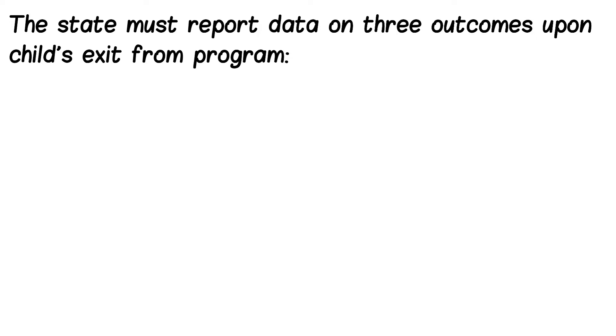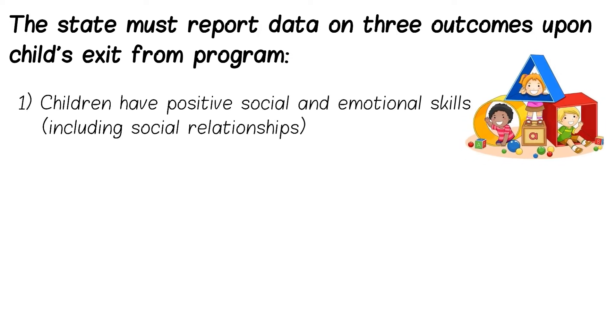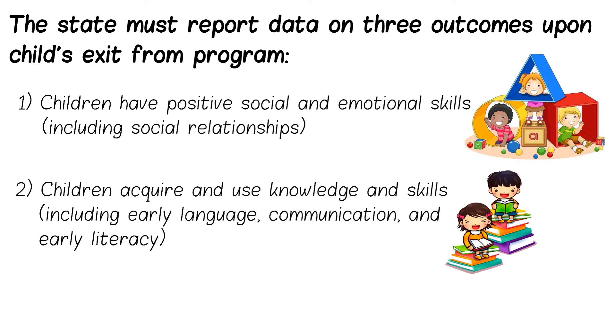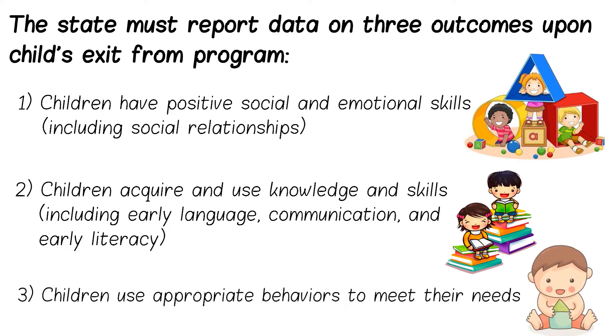The three outcomes are: Children have positive social-emotional skills, including social relationships. Children acquire and use knowledge and skills, including early language, communication, and early literacy. Children use appropriate behaviors to meet their needs.